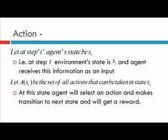We will tackle all these issues in the upcoming slides. At this stage, the agent selects an action and makes a transition to the next state and receives a reward. There is a continuous interaction process: the agent finds itself in a particular state with the reward from the previous action as input, then selects a particular action. The set A(st) denotes all possible actions in state st, and the agent selects an action and makes a transition to the next state.